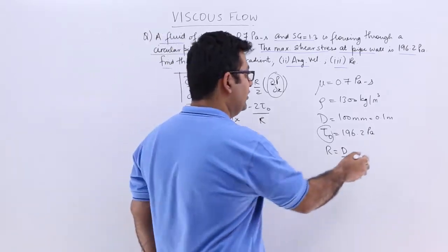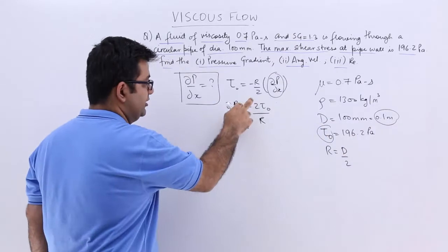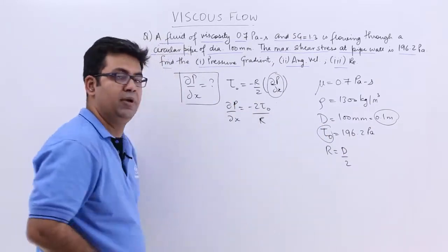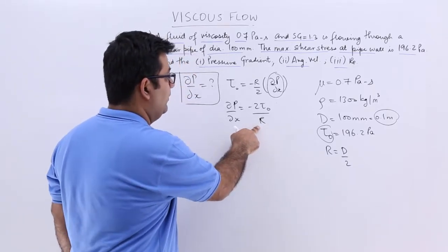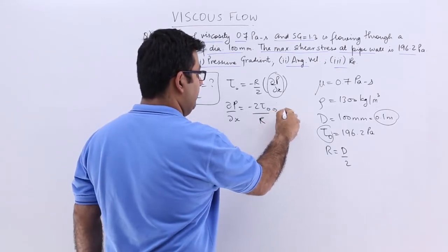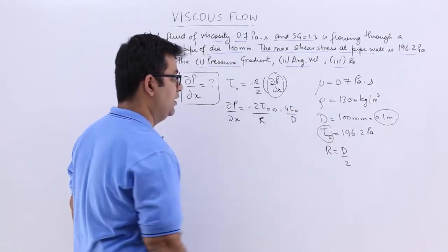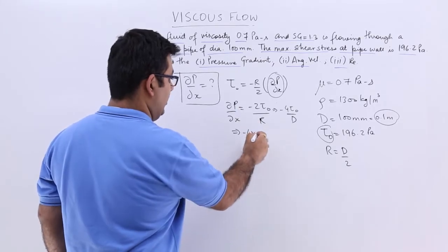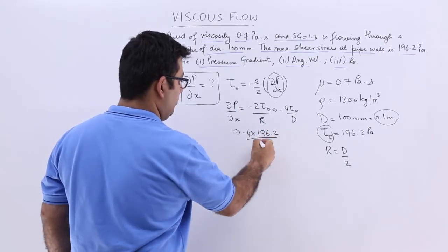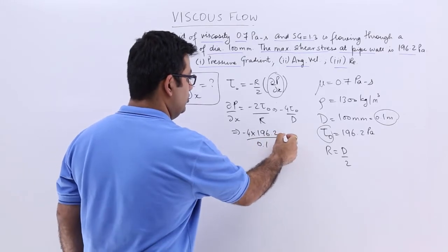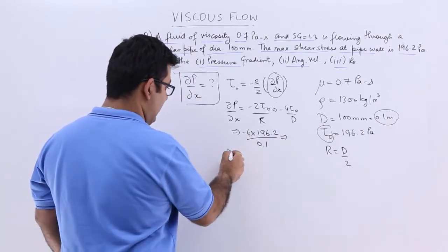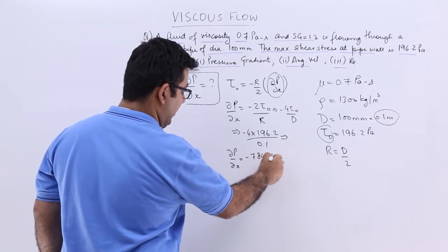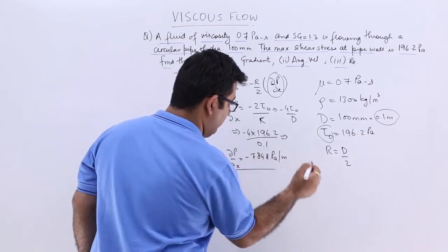So this can also be, if you are not comfortable in dealing with decimals, then you have to substitute here D by 2, so you will get minus 4 into tau 0 upon D. So you will get minus 4 into 196.2 upon 0.1. So this gives you a value of curly P upon curly X as minus 7848 Pascals per meter.